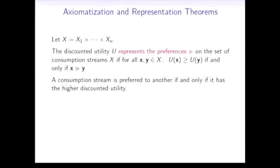We say the discounted utility represents our preferences on the set of consumption streams if one consumption stream is preferred to another if and only if its discounted utility has a higher value.